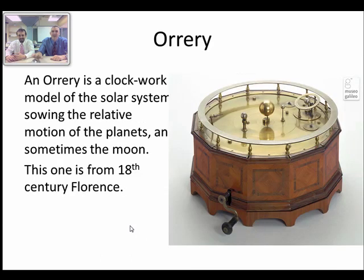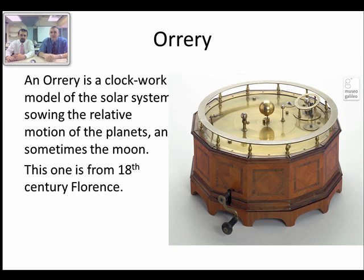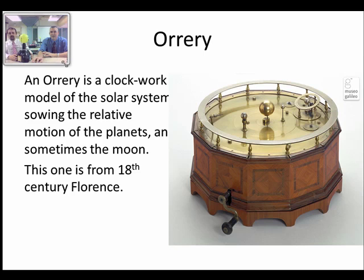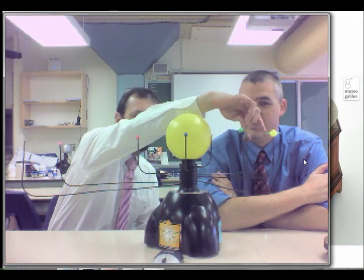The other device is an orrery — basically a clockwork solar system. This is a heliocentric model with the Sun in the middle and the planets around it — this one even has a little moon ring. There's a beautifully carved one from 18th century Florence, but we also have one in our classroom. This electric one has the Sun in the middle and little planets — you can spot Saturn because they've nicely put the rings on it.